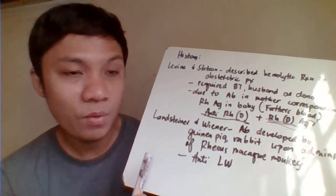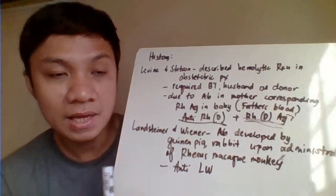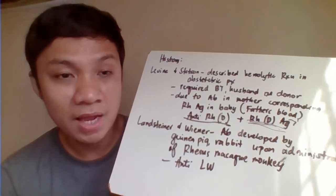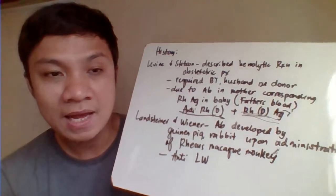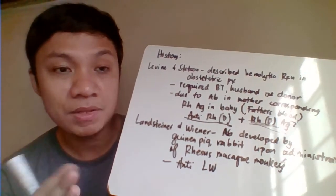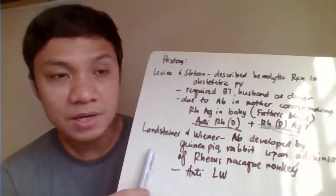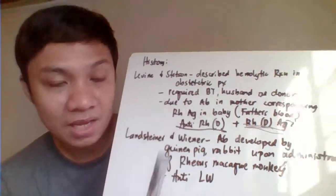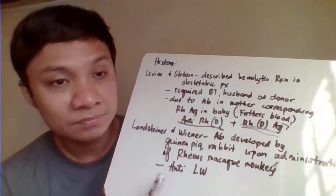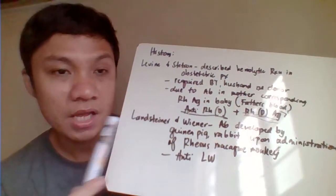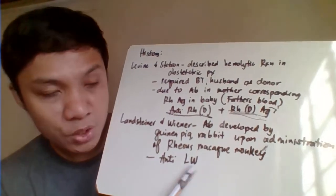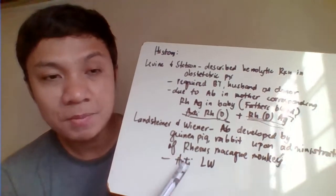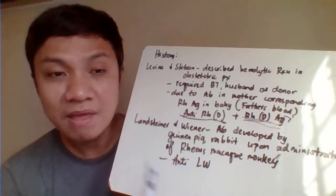Another milestone: Landsteiner and Wiener also tried to isolate an antibody produced after administering rhesus macaque monkey blood to guinea pigs and rabbits. The guinea pigs and rabbits developed an antibody. Landsteiner and Wiener initially thought they had isolated the same antibody as Levine and Stetson, but later found out they were different. The antibody produced from the rhesus monkey experiment is the anti-LW, which is different from the RH blood group system. However, the name 'RH' came from the rhesus monkey.